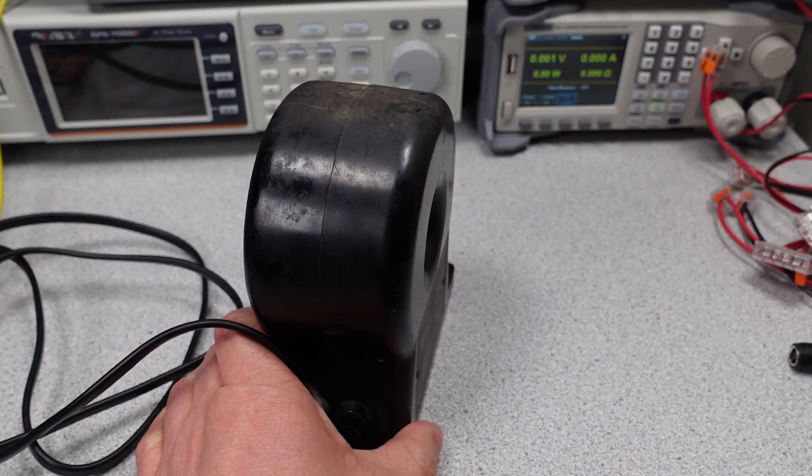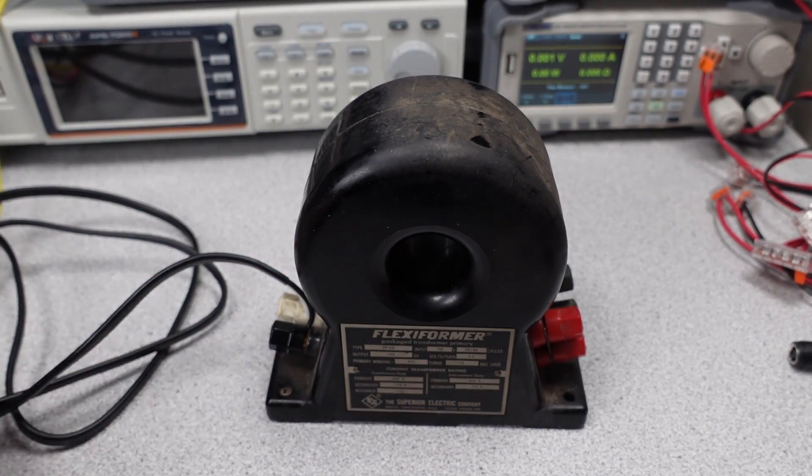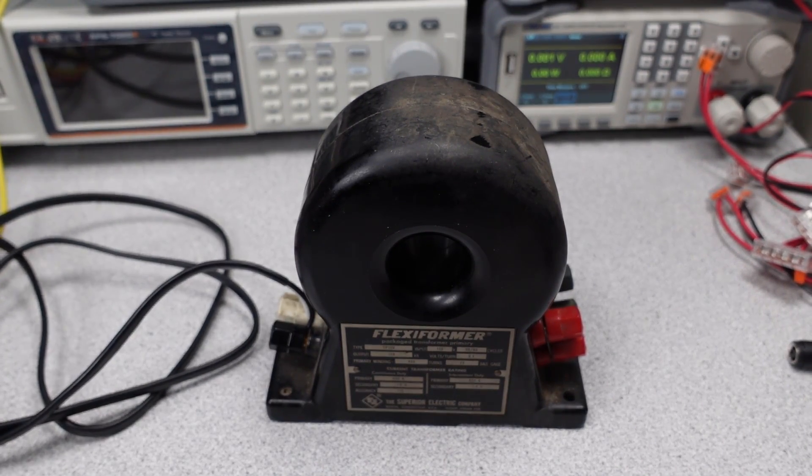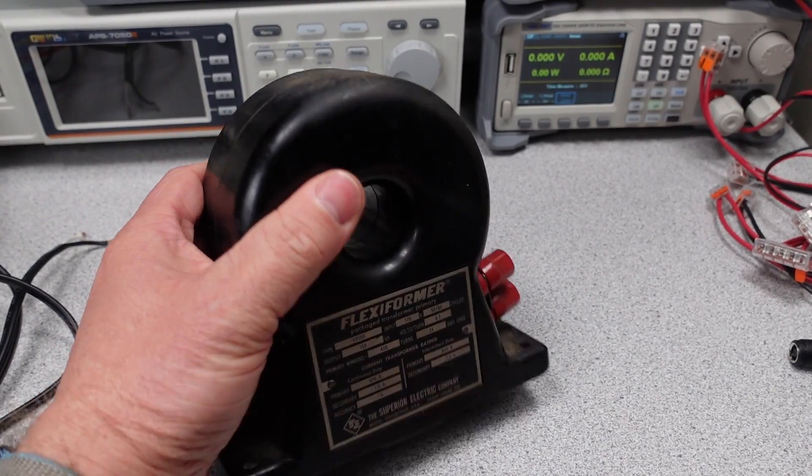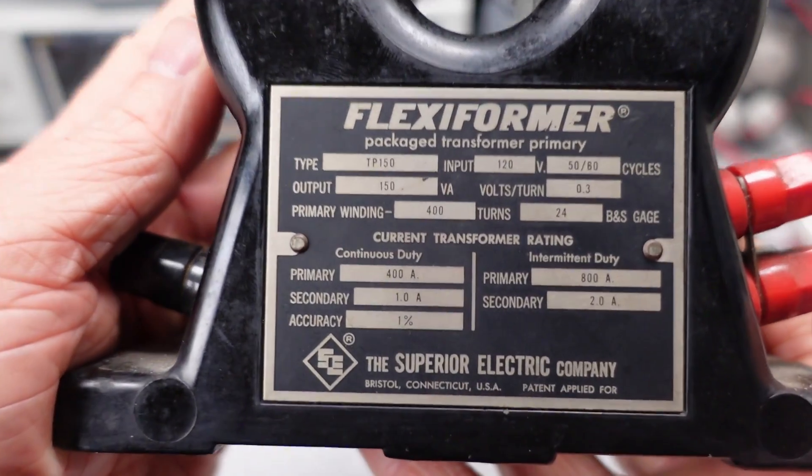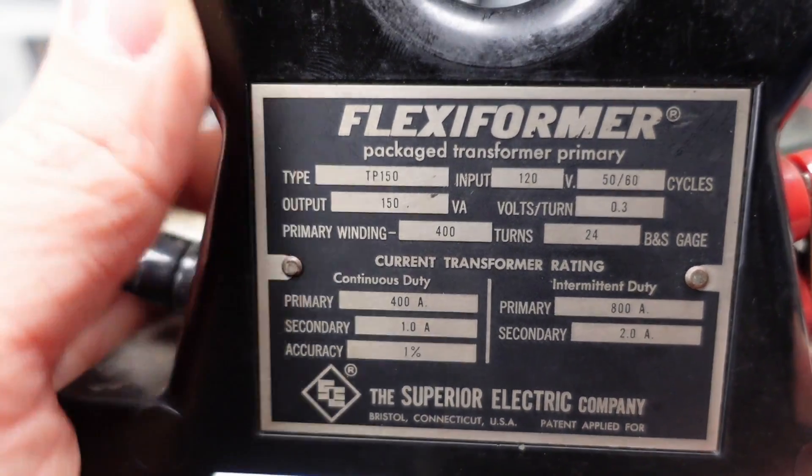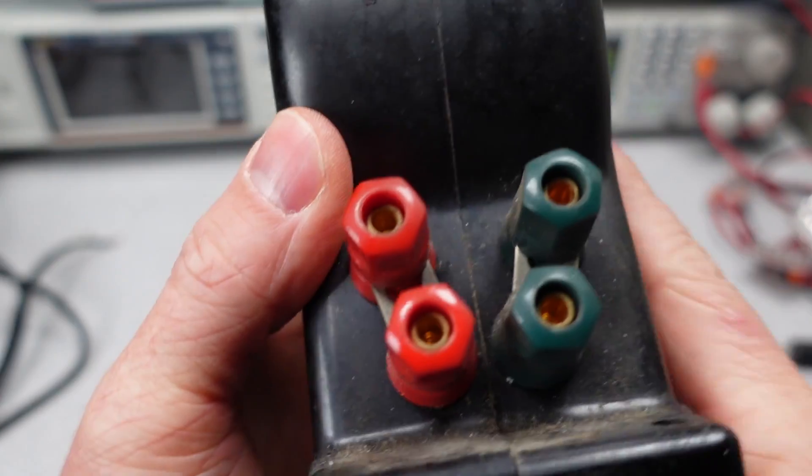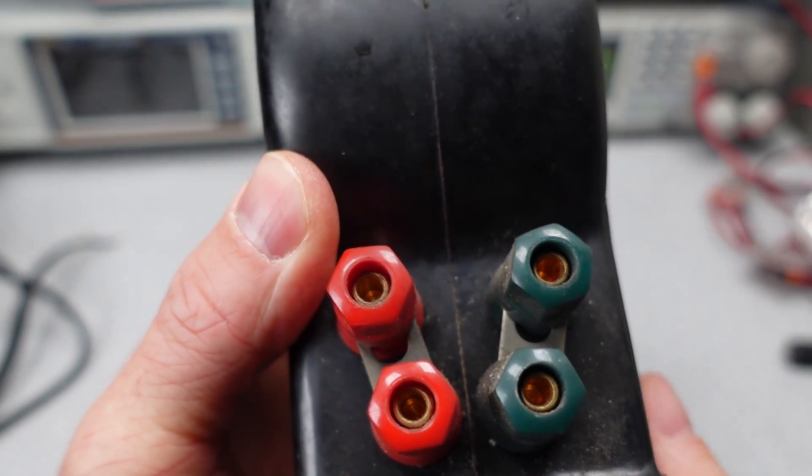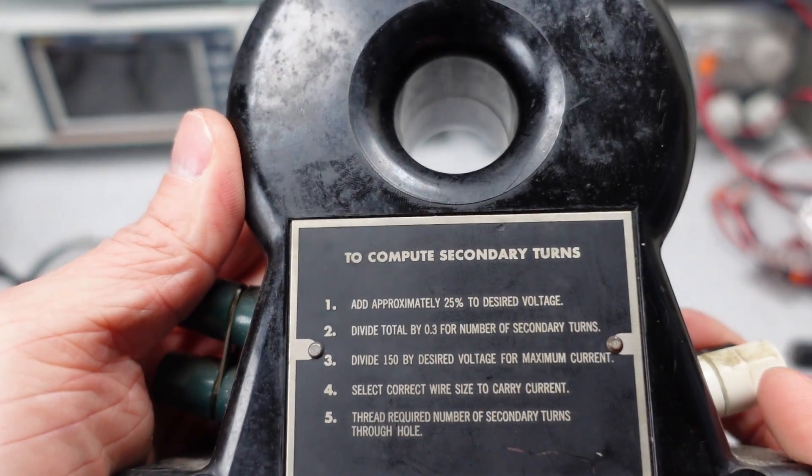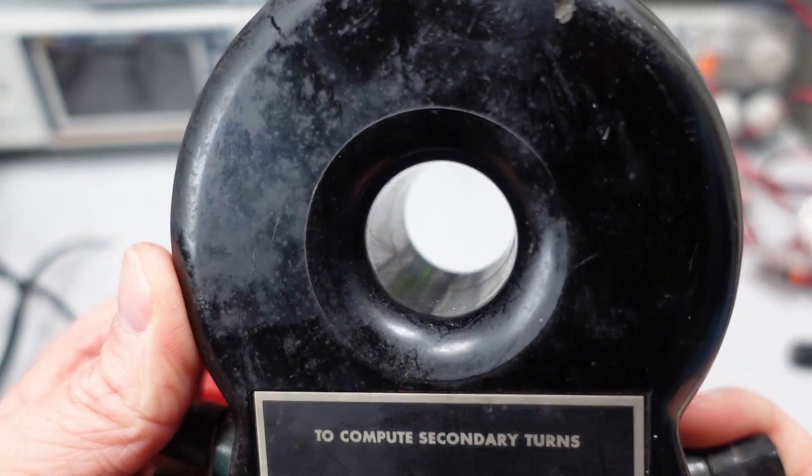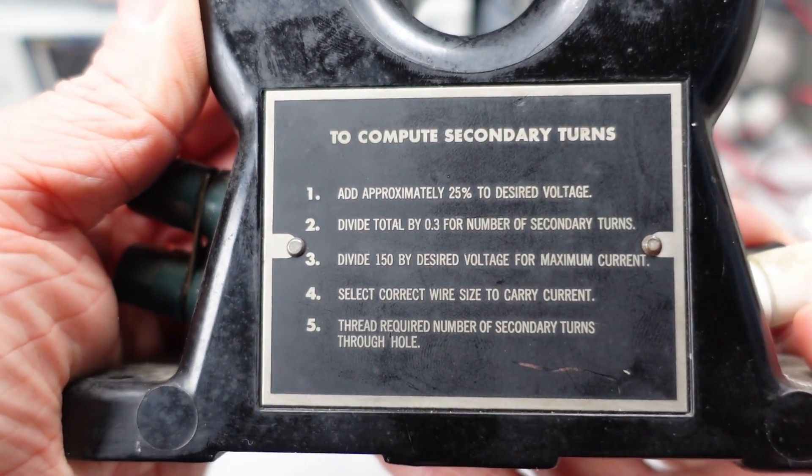So let's take a look at the flexiformer. It is a somewhat large and heavy half transformer. The device itself has a bunch of markings on it that let us know some basic specifications. They even give us the expected error rate. 1% sounds really good. The other side of the device has some instructions for how many windings to add to calculate the expected voltage on the output side. It looks like it's a really easy device to use to get voltages on the output. You just have to do some custom wiring to make it all happen.